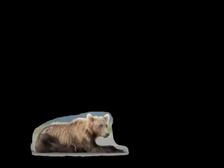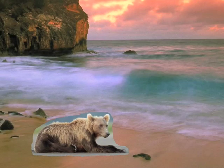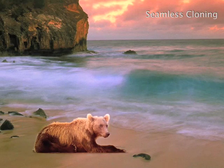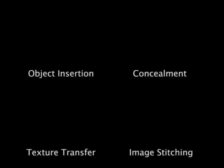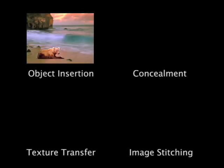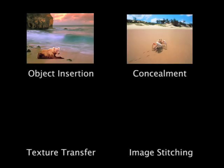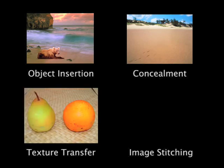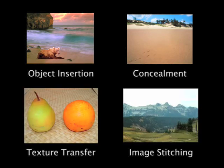Seamless cloning of a source image patch into a target image is a useful image editing operation. Poisson image editing, based on solving the Poisson equation, is a powerful cloning technique that was shown to be useful in scenarios such as object insertion, concealment, texture transfer, and image stitching.